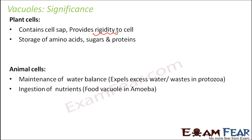In animal cells, vacuoles also serve different roles. It is generally observed that in young cells there are many small vacuoles, but as cells become matured, the number of vacuoles join together to form one large vacuole.